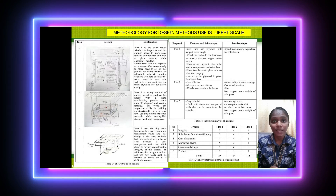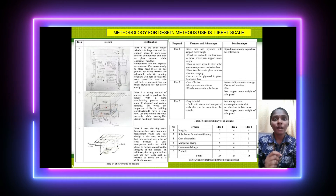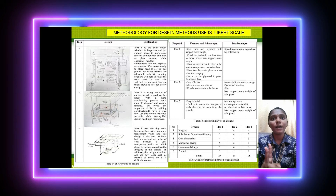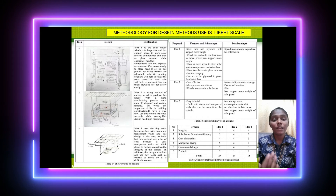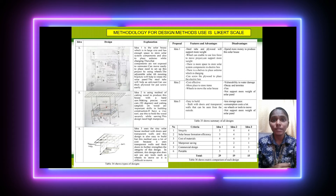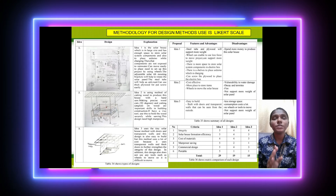The first solar house design is made of thick plywood. The second idea is made of wood. The third is made of mirrors. As a result, the thick plywood is preferred because it allows for easy screw placement. According to the dimensions of the solar house, option one has the most space to store components.